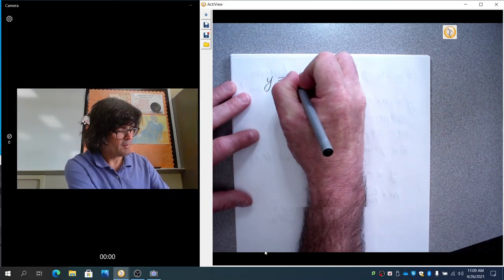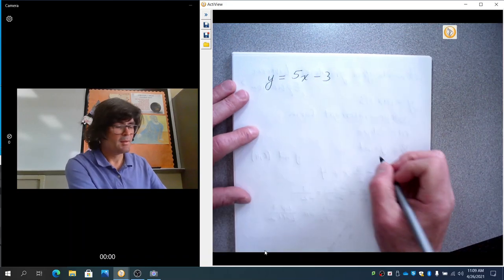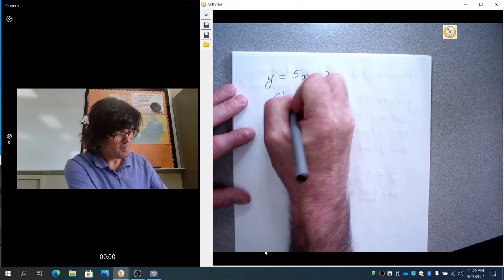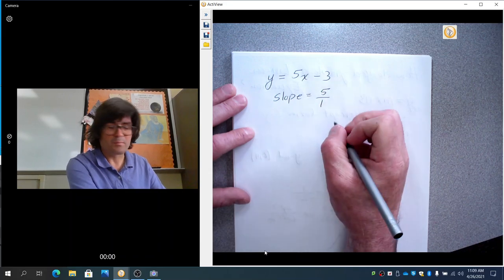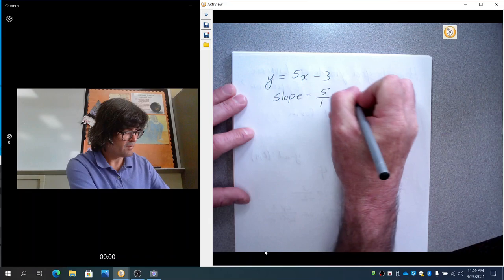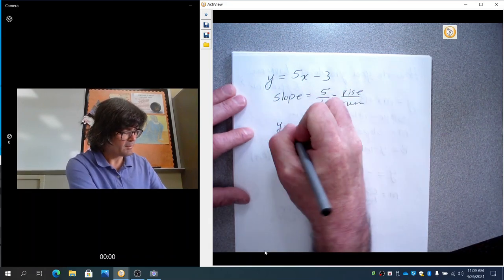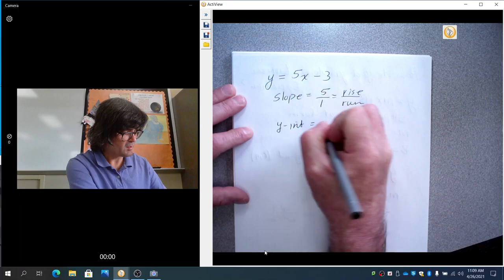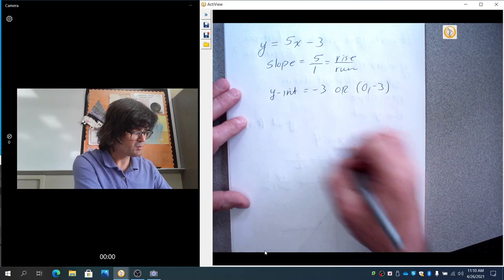We'll do y equals 5x minus 3. This time, the slope is 5. I'm going to write that as 5 over 1, where that's the rise of 5 and the run of 1. And the y-intercept is going to be negative 3, or you could say 0, negative 3.